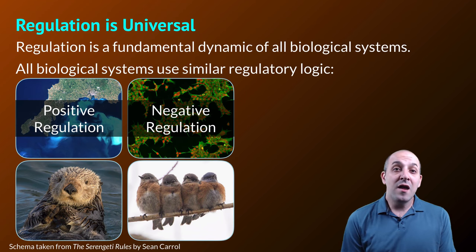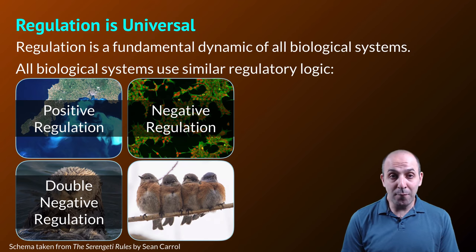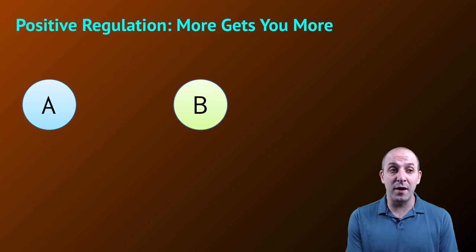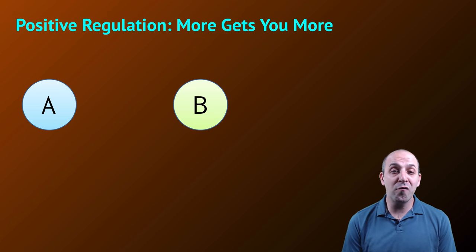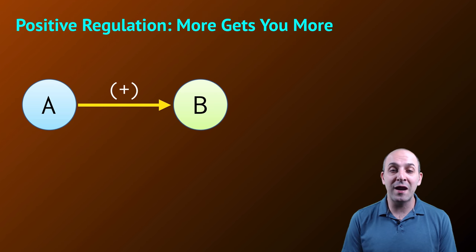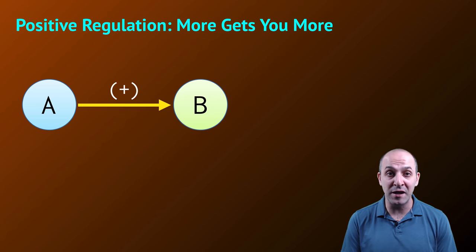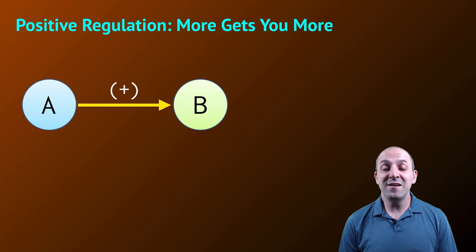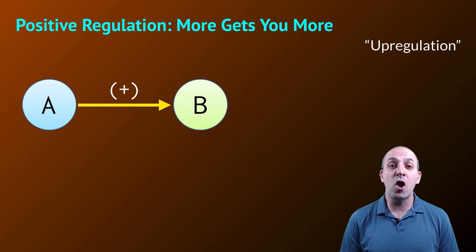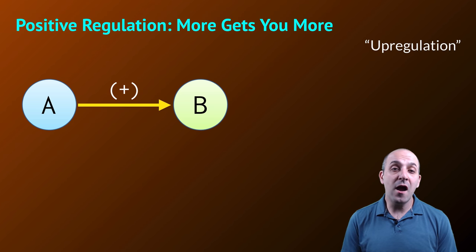We're going to look at positive regulation, negative regulation, double negative regulation, and feedback regulation. Let's start with positive regulation. In a positive regulatory system, more of one thing gets you more of the next thing. Let's consider any system with two different interacting components, A and B. In a positive regulatory framework, A has a positive effect on B — the more of A we have, the more of B we have. This is what the word positive means here: it doesn't mean good, it just means more. Another way to describe this is to say that A up-regulates B.